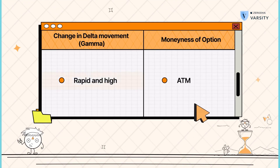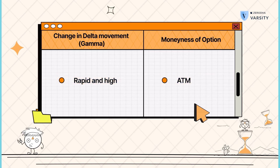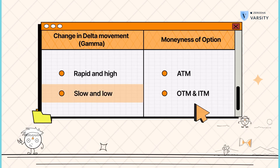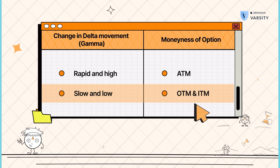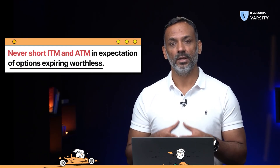Before we end this video, I'd like to touch upon three things you should understand about gamma. First, the gamma of an option is always highest for an at-the-money option — therefore, the rate of change of delta is always highest for an at-the-money option. On the contrary, gamma is lower for out-of-the-money and in-the-money options. As an extension to that, never short an at-the-money or in-the-money option with an expectation that the option will expire worthless. If you intend to short an option, always choose an out-of-the-money option to sell.